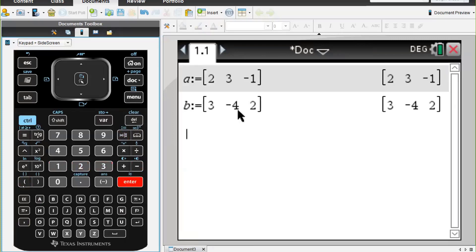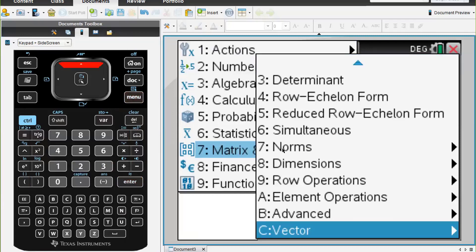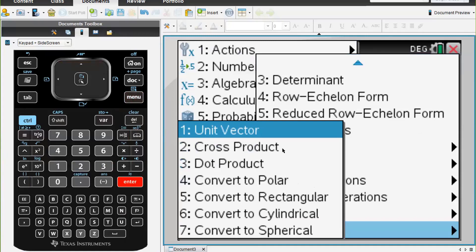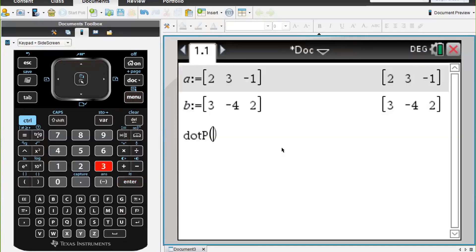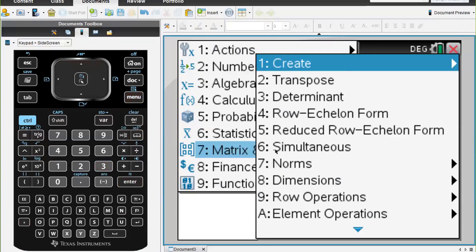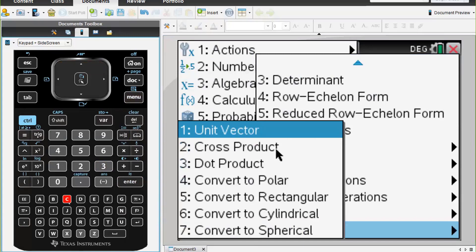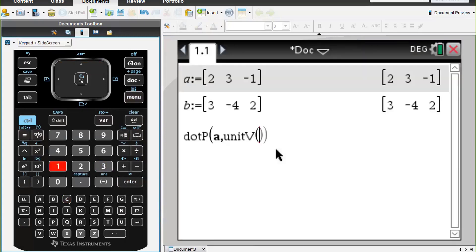Now what we have to do is press the menu, we're going to go to matrix and vector, press the up arrow because it brings us to the vector menu, press select. We want to get the dot product number three, and then we're going to put in vector a comma. We have to go back to menu to find the unit vector number seven. This is the up arrow, we can type c to select that, and then we want to have the unit vector which is number one, then we want to put vector b in there and press enter.